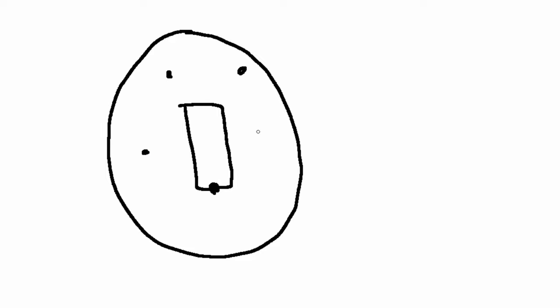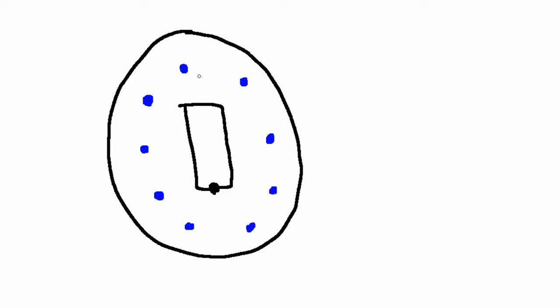Similar to baseball, there are two teams. There's the defending team — all the players are out in the field playing different positions. They're trying to make outs, which in cricket are called wickets. So you've got the defenders all in the field, and there's also a bowler.